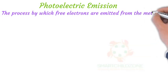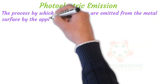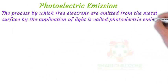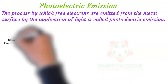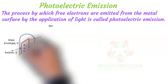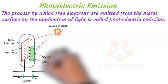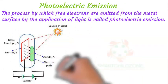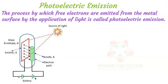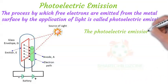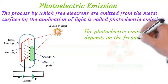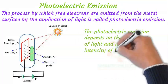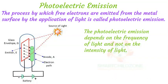The process by which free electrons are emitted from the metal surface by the application of light is called photoelectric emission. In other words, the photoelectric emission is the process through which free electrons are liberated from the surface of metals when it absorbs light. The photoelectric emission depends on the frequency of light and not on the intensity of light.